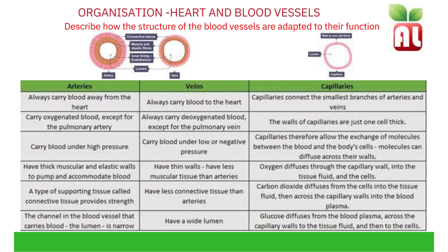There are arteries and veins going into and out of the heart. Veins carry blood into the heart. The vena cava is a vein that carries deoxygenated blood into the heart from the body. The pulmonary vein takes oxygenated blood into the heart from the lungs. The pulmonary artery carries deoxygenated blood away from the heart to the lungs. The aorta is an artery that carries oxygenated blood to the rest of the body.